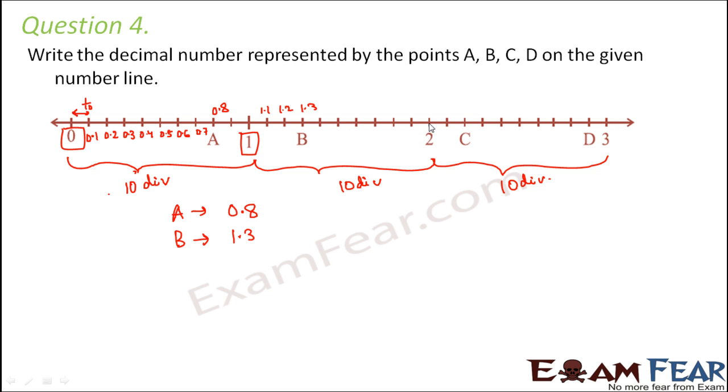Now what is C? So C is again after two. So if this is two, this is 2.1, this is 2.2. So C would be 2.2. What about D? So D is just one before three. So that means this would be 2.9.